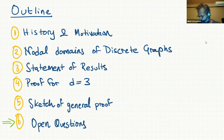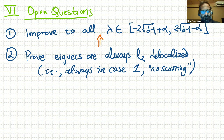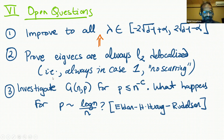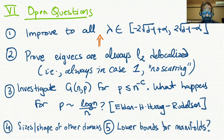Let me end with open questions. First, improve this spectral window — the cleanest approach being to show case two never happens, which is a probably-true conjecture in random matrix theory. Second, investigate what happens for Erdős-Rényi as you approach sparse graphs: is there a critical probability at which interesting nodal domain structure emerges? This was suggested by Huang and Rudelson. Third, study the sizes and shapes of nodal domains. Fourth, a speculative question: is this at all useful for saying anything about manifolds?